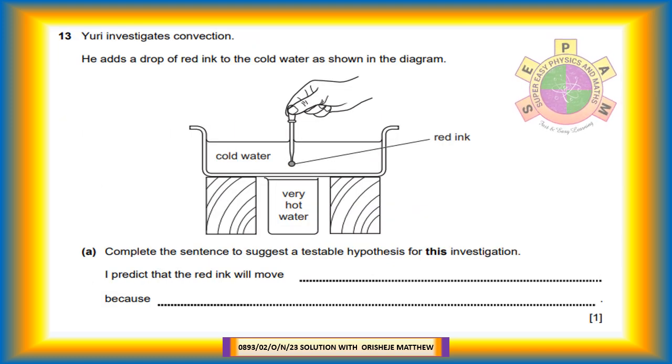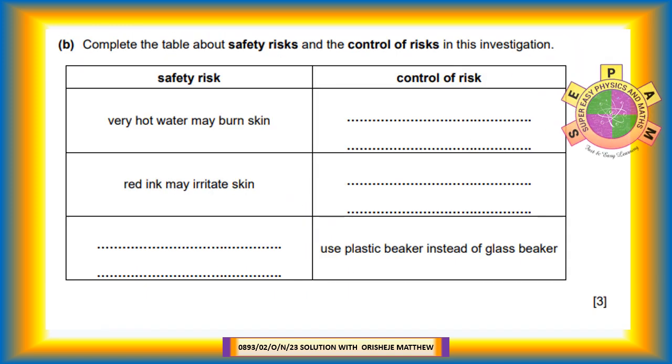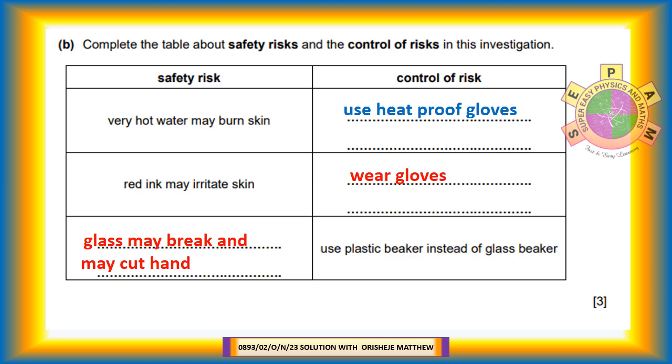Question 13. Uri investigates convection. He adds a drop of red ink to the cold water as shown in the diagram. Question 13a: Complete the sentence to suggest a testable hypothesis for this investigation. I predict that the red ink will move upwards because cold water has been warmed or the warmed water rises or the warmed water has an upward convection current. Question 13b: Complete the table about safety risks and the control of risks in this investigation. First safety risk: very hot water may burn skin. First control of risk: use heat-proof gloves. Second safety risk: red ink may irritate skin. Control of risk: wear gloves or do not use poisonous red ink. Third control of risk: use plastic beaker instead of glass beaker. Third safety risk: glass may break or student may cut hand on glass.